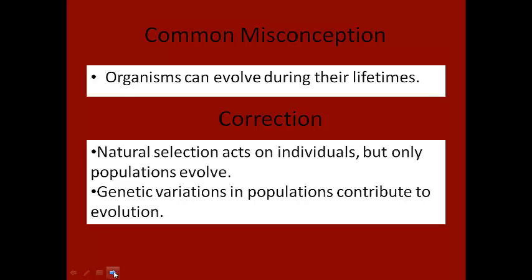Number one: natural selection acts on individuals. So certain individuals, as we talked about with natural selection before, will survive or not survive depending on the traits they have. Natural selection will determine whether or not an individual survives. But it's only the whole population of individuals that actually evolves. A particular individual cannot evolve — it's the population, the group of organisms of the same species, that actually evolves or changes over time.